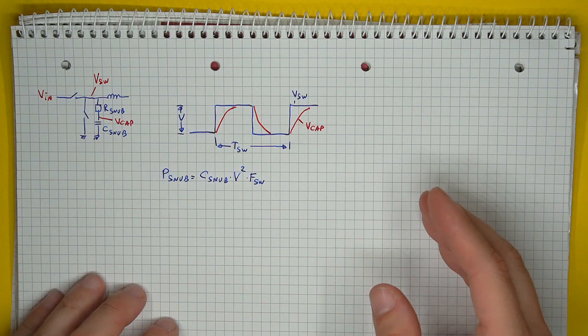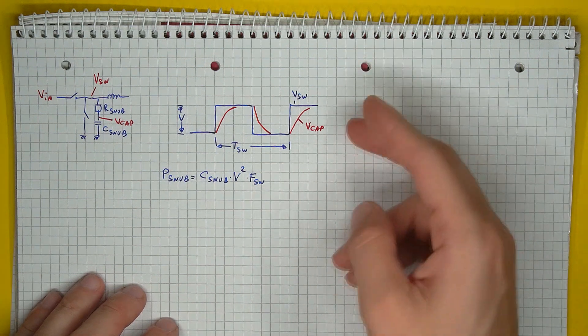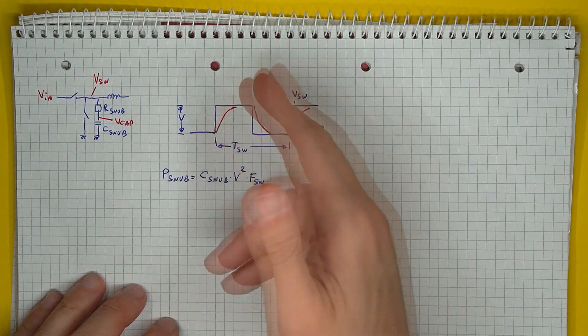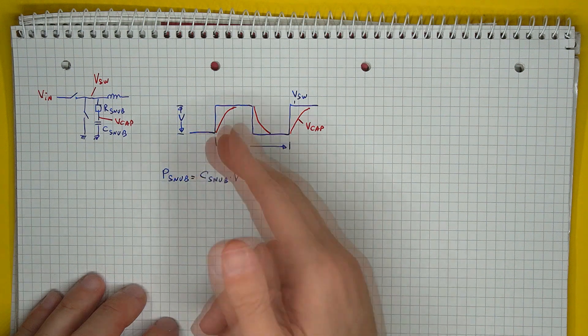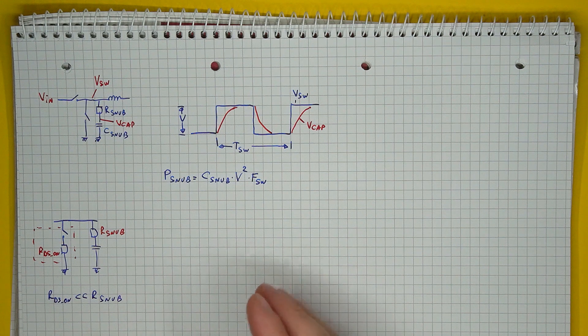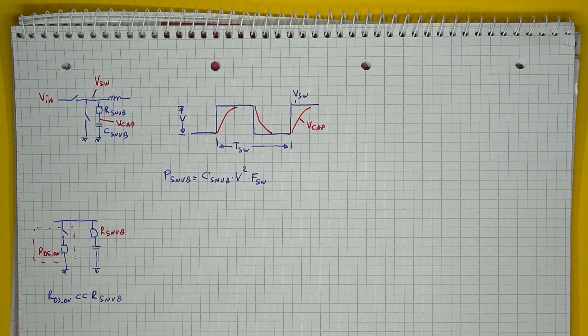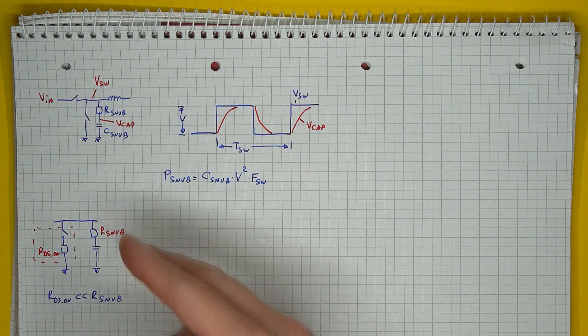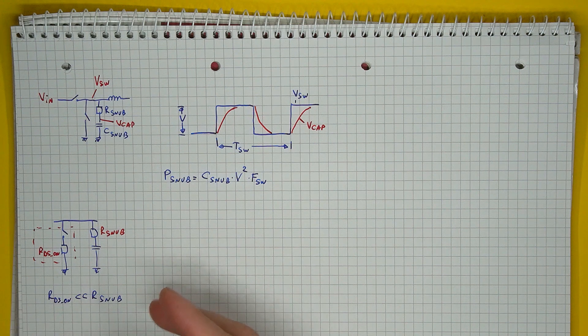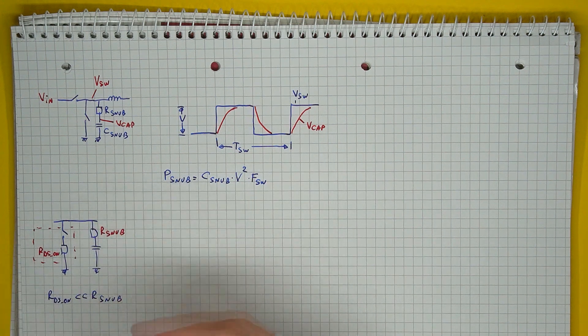So the power used by the snubber would be the power needed to charge this capacitor. The larger the capacitor, the more energy gets wasted. Of course, this power is also dependent on the exact voltage to which the capacitor is charged, and the frequency. So the charging and discharging of this capacitor occurs in every switching cycle. The second important assumption is that the switch's internal resistance,